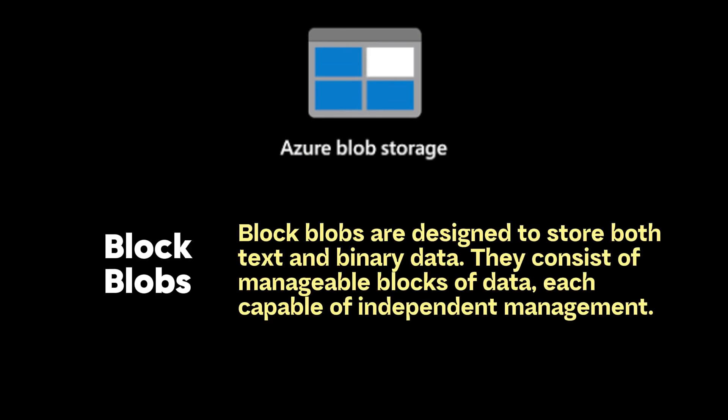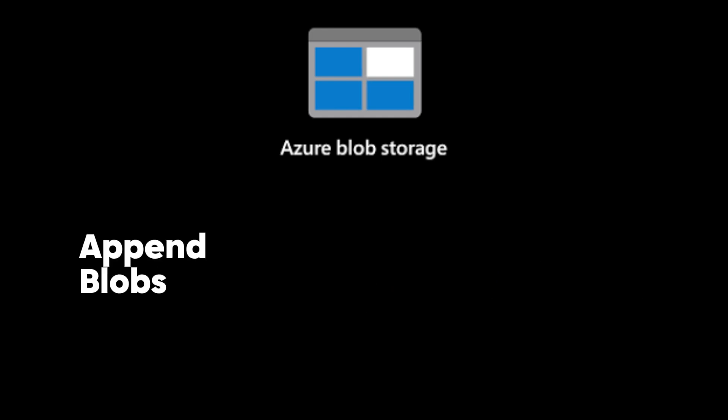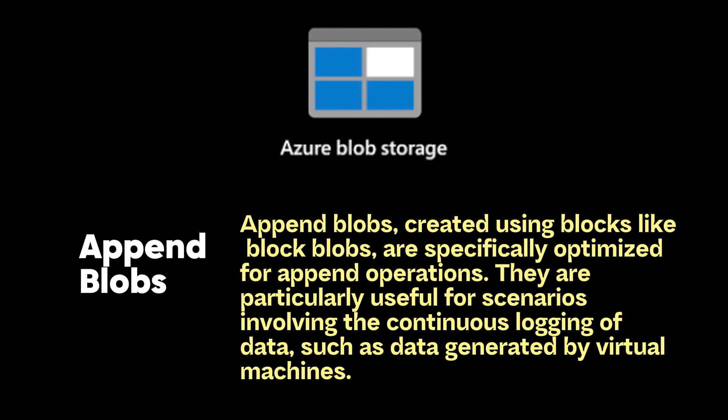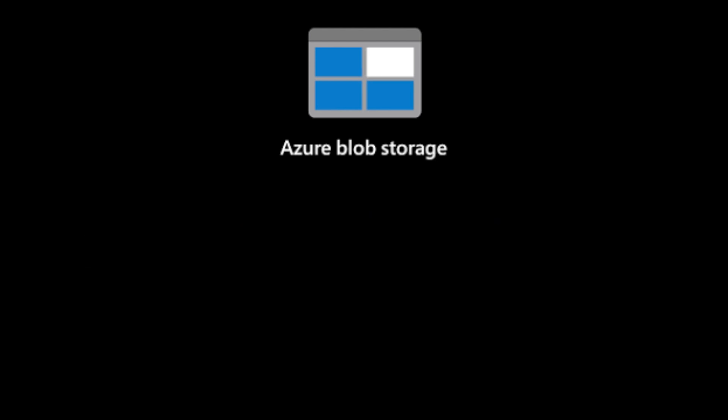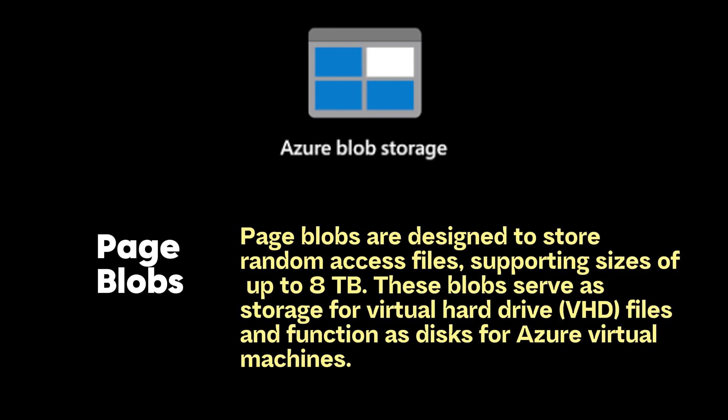First, Block Blobs are designed to store both text and binary data as consistent, manageable blocks. Each block is capable of independent management, with a storage capacity of approximately 4.7 TB, and larger Block Blobs up to 190.7 TB. Second, Append Blobs are optimized for append operations, particularly useful for continuous logging of data such as data generated by virtual machines. Third, Page Blobs are designed for random access files supporting sizes up to 8 TB, and importantly, Page Blobs serve as the virtual hard drives for Azure Virtual Machines — a point that may appear on the AZ-900 exam.